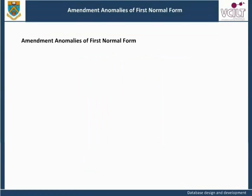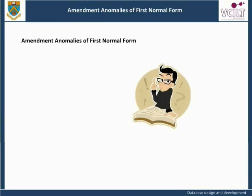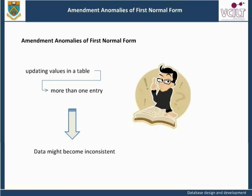It is not possible to have a key field with a null or empty value because of the requirements of entity integrity. Amendment Anomalies of first normal form: there is a problem in updating values in a table in first normal form. If there is more than one entry in the relation, any change to that individual's details must be reflected in all such entries, otherwise the data will become inconsistent.